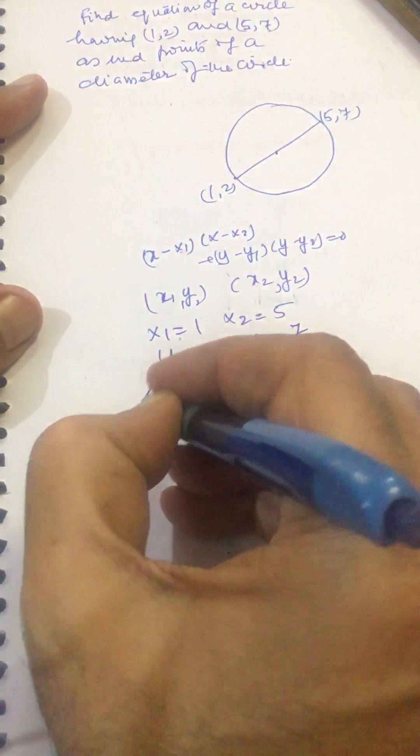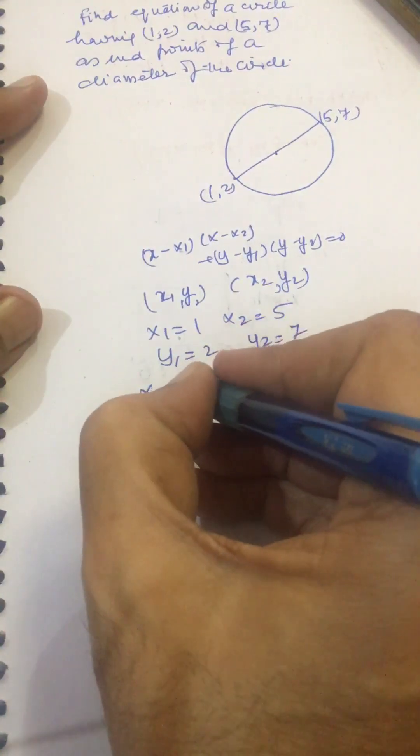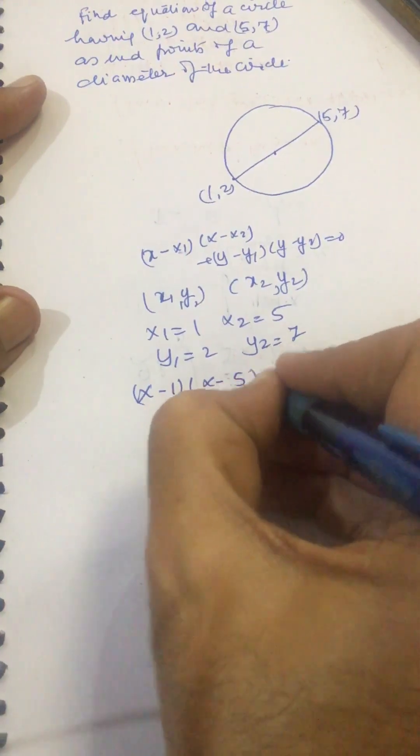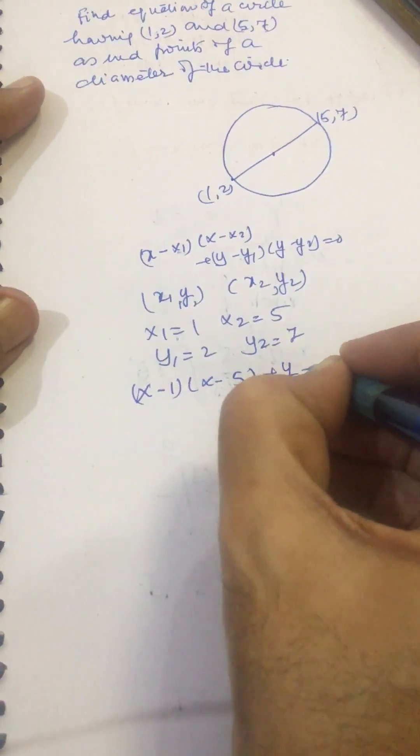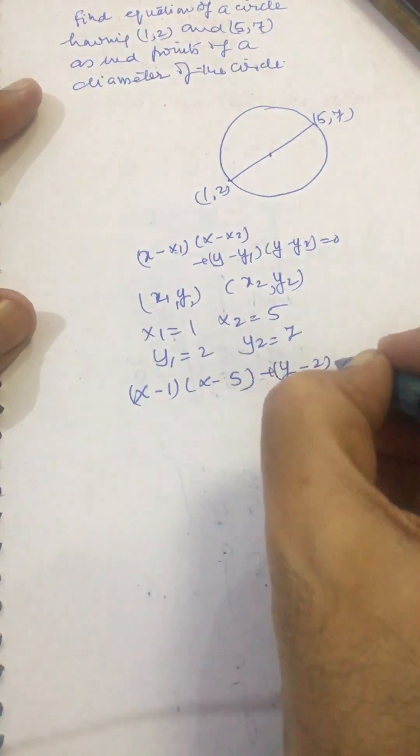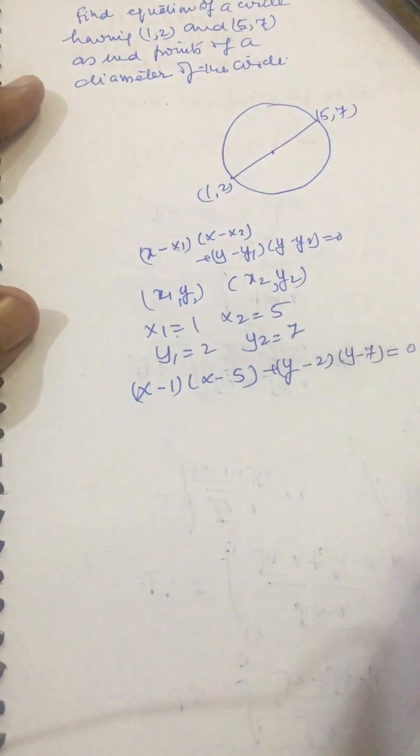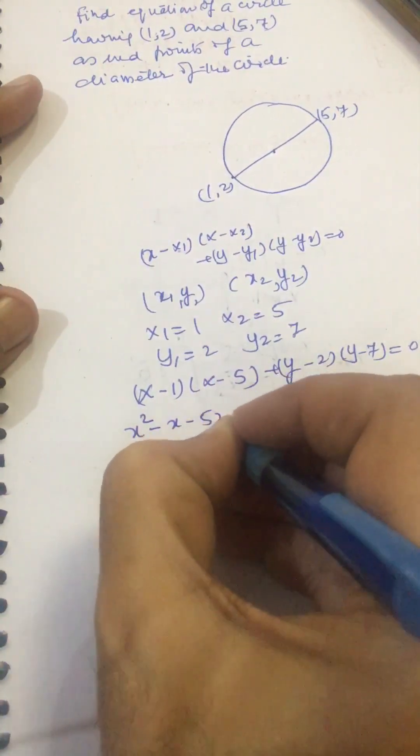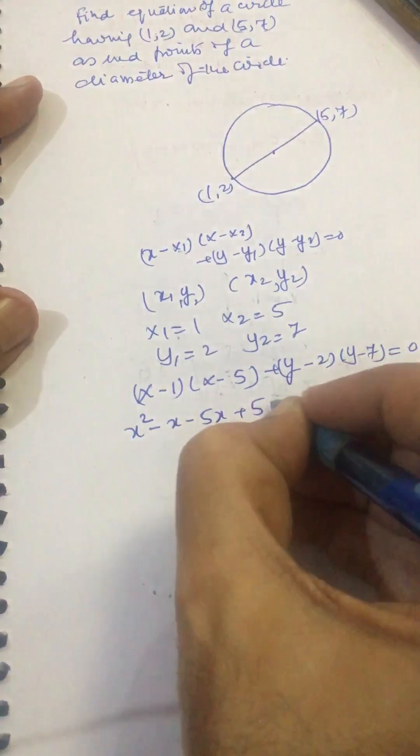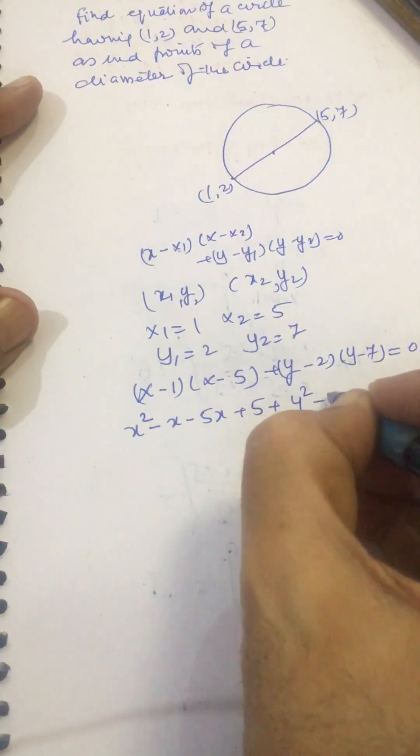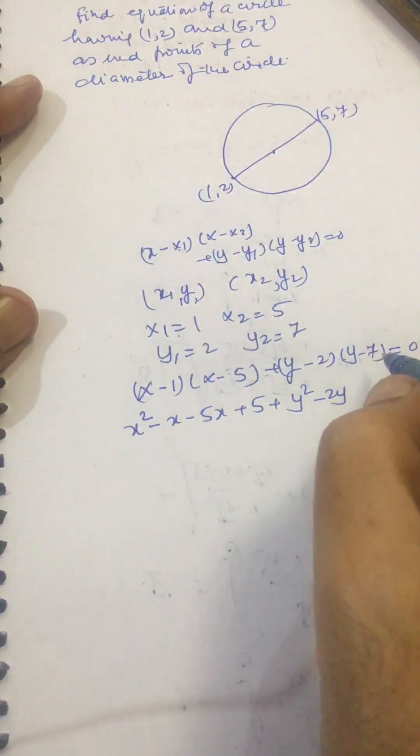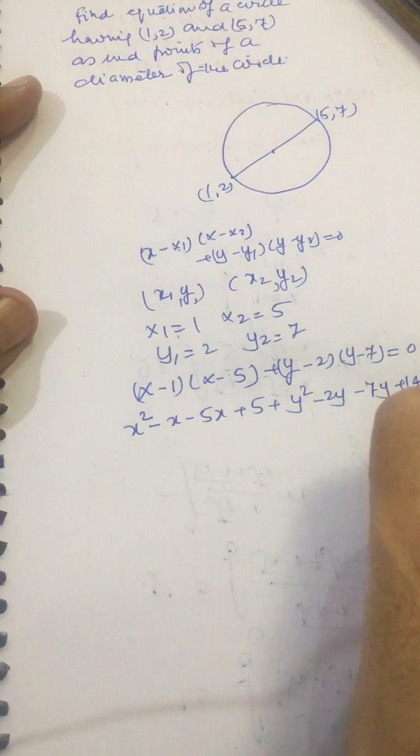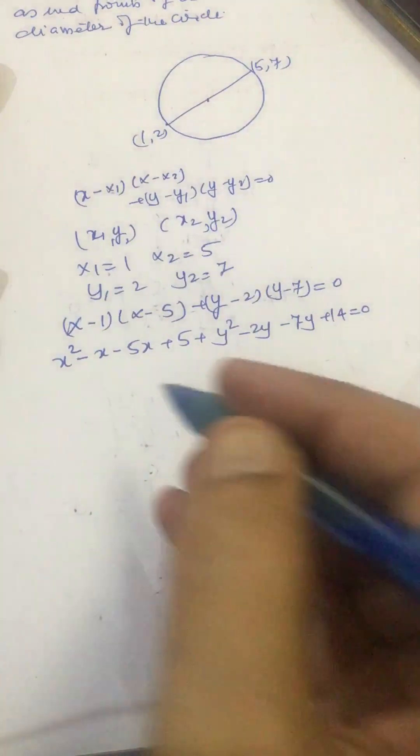Circle equation will be given by (x - 1)(x - 5) + (y - 2)(y - 7) = 0, or x² - x - 5x + 5 + y² - 2y - 7y + 14 = 0.